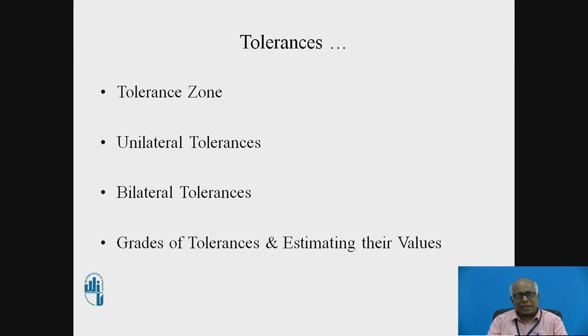Now these tolerances are two types. One is called as unilateral and another is called as bilateral tolerance. When the tolerance zone is placed only on one side of the basic size or zero line, it is called as unilateral tolerance.